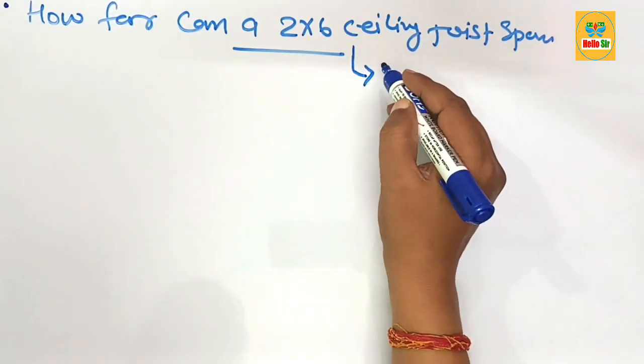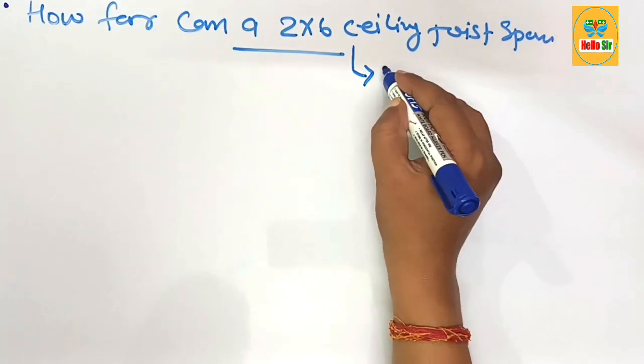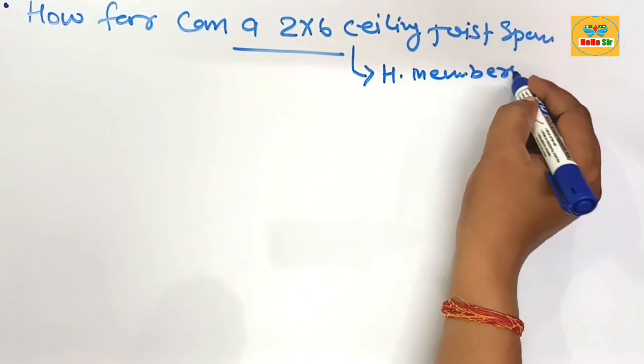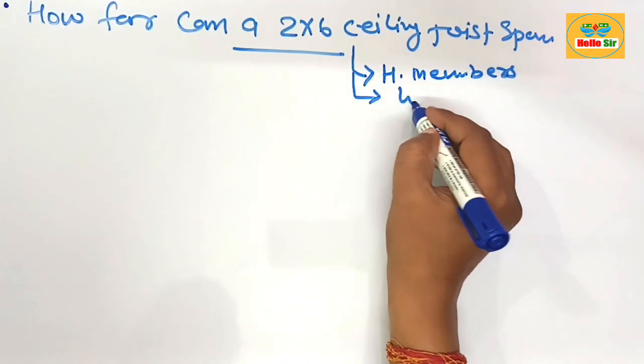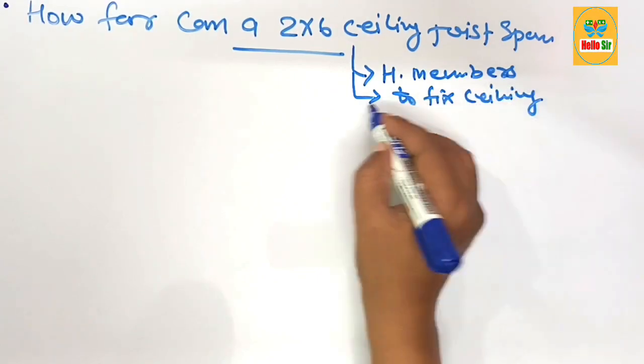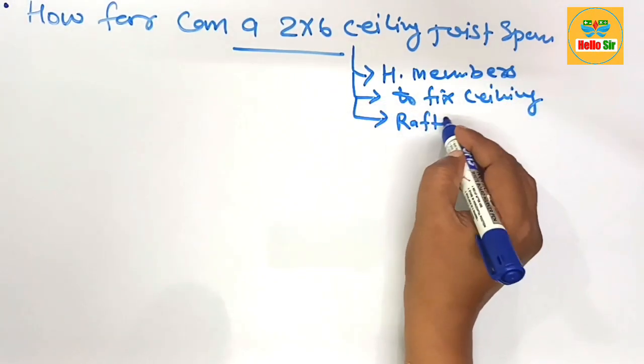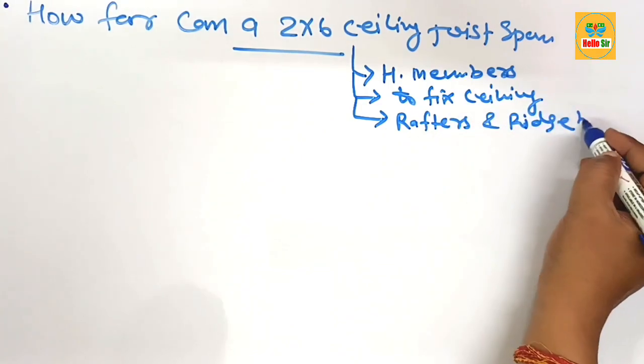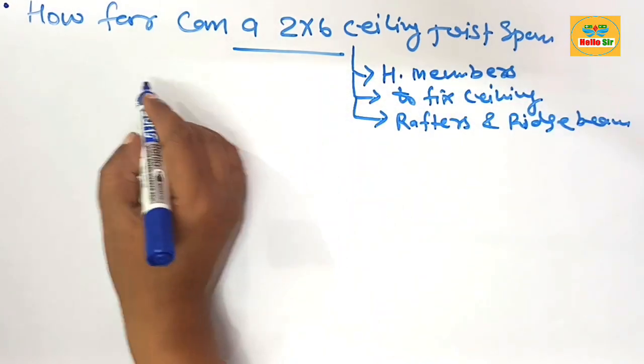You know that the ceiling joist in a typical roof framing system is a horizontal member that provides structure to fix the ceiling and provides structural support to rafters and the ridge beam. First we'll make a rough diagram to understand the roof framing system.